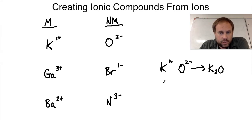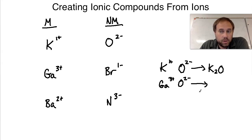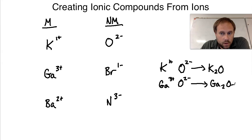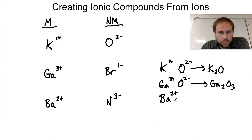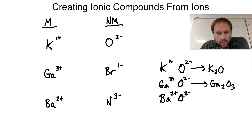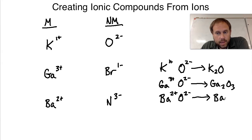Gallium with oxygen: Ga is 3+ and O is 2−. The least common multiple is 6, so I need two galliums to get 6+ and three oxygens to get 6−, giving Ga₂O₃. Then barium with oxygen: Ba is 2+ and O is 2−. They already cancel in a 1-to-1 ratio, so it's just BaO — not Ba₂O₂. You must reduce by the common factor when charges are equal.